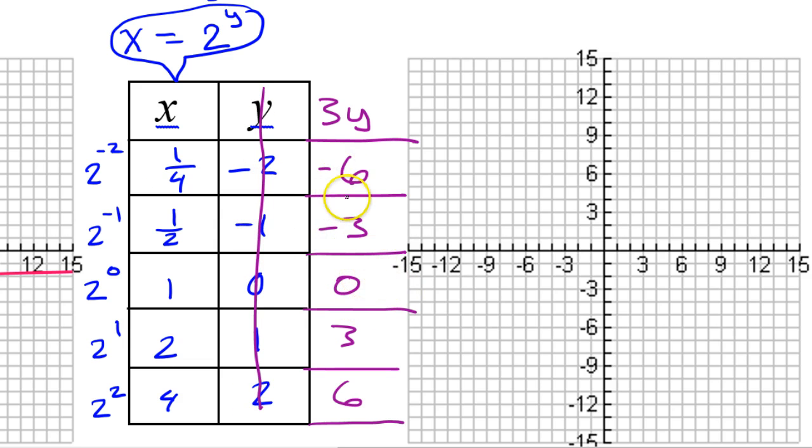So let's go ahead and plot these points from the chart. So right 1/4 down 6. So right 1/4 is going to be barely over at all. Something like that. Right 1/2 down 3. So that should be right in the middle.